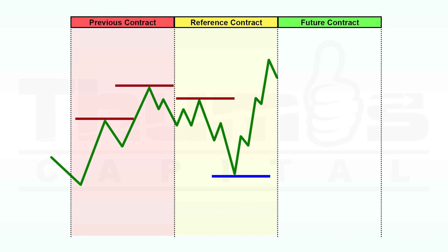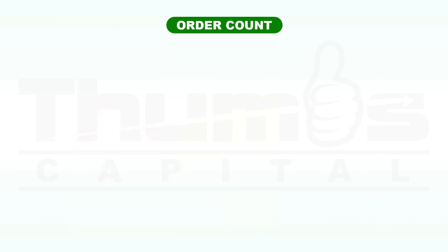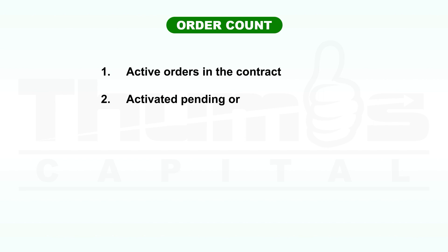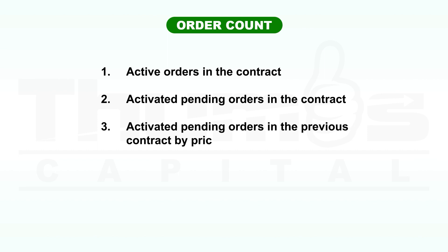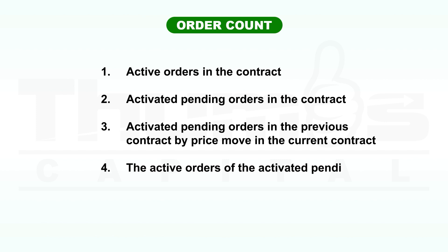Let me break it down to make it easier to grasp. The orders that make up the accumulation order count in the current intraweek contract are: 1. active orders in the contract; 2. activated pending orders in the contract; 3. activated pending orders in the previous contract by price move in the current contract; 4. the active orders of the activated pending orders from the previous contract.